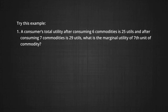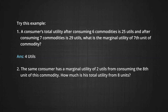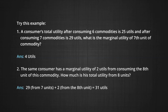Let us try an example. A consumer's total utility after consuming 6 units of a commodity is 25 utils, and after consuming 7 units is 29 utils. What is the marginal utility of the 7th unit? The answer is 4 utils. The same consumer has a marginal utility of 2 utils from consuming the 8th unit. How much is his total utility from 8 units? The answer is 29 plus 2, which makes 31 utils in all.